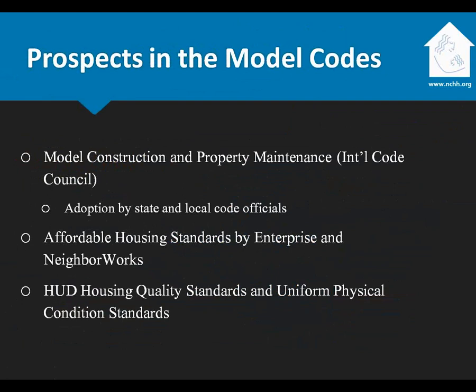Where does the National Healthy Housing Standard fit into the model codes? The property maintenance code is the biggest opportunity — it applies to all existing housing and has been adopted by probably several hundred localities. The National Healthy Housing Standards provisions are also being incorporated into affordable housing standards by Enterprise and NeighborWorks, and LEED is looking at it as well. HUD is also looking at upgrading their standards to incorporate provisions of the National Healthy Housing Standards.